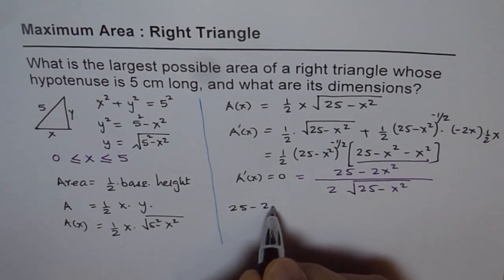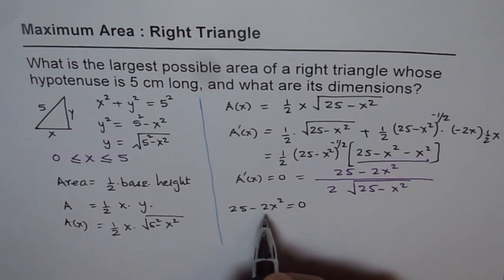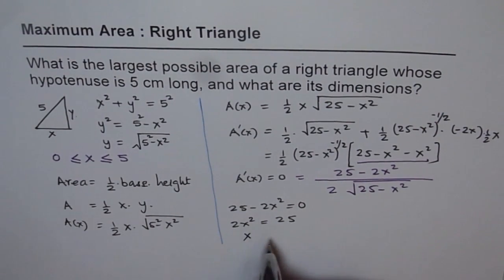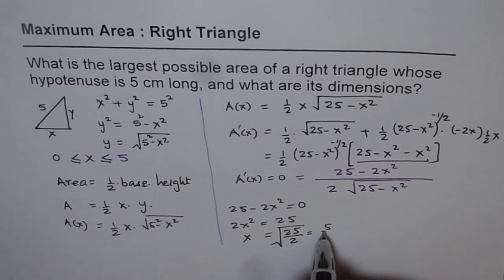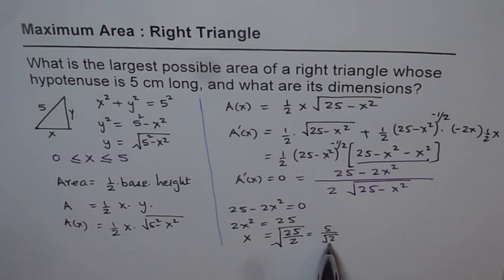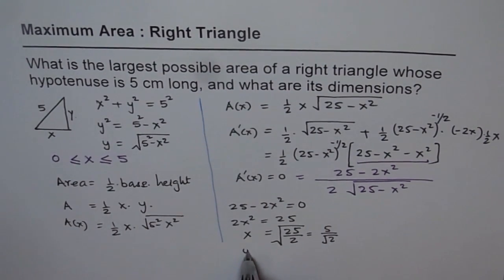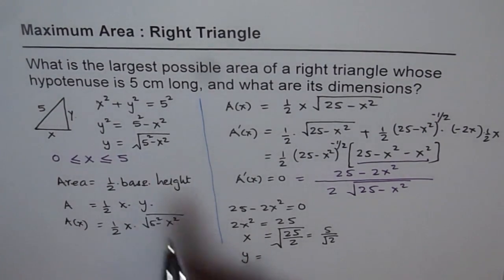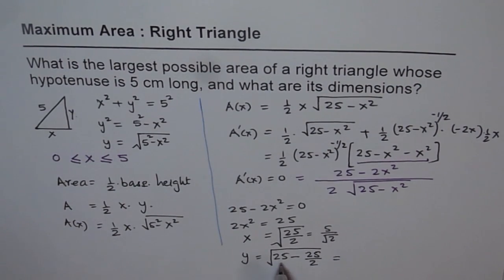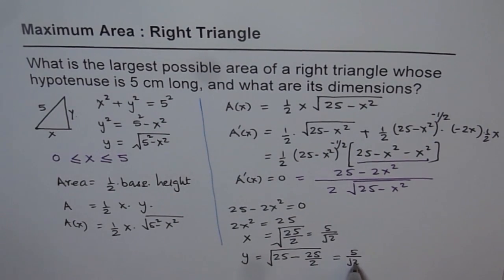Setting 25 minus 2x squared equals 0 gives 2x squared equals 25, so x equals the square root of 25 over 2, which is 5 over the square root of 2. That is the critical number. If x is 5 over root 2, then y equals the square root of 25 minus 25 over 2, which is the square root of 25 over 2, giving y equals 5 over the square root of 2 as well.